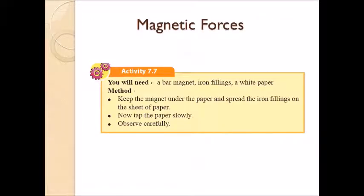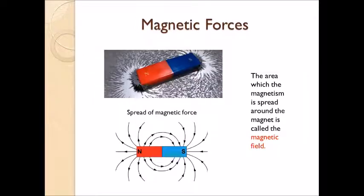What are magnetic forces? To do activity 7.7, you will need the bar magnet, iron filings and a white paper. Keep the magnet under the paper and spread the iron filings on the sheet of paper. Then tap the paper slowly. You can see that the iron filings are arranged according to a pattern.